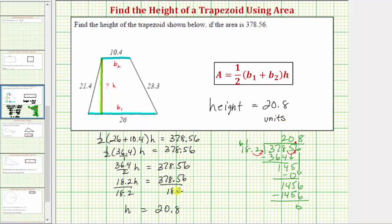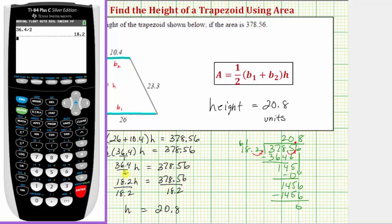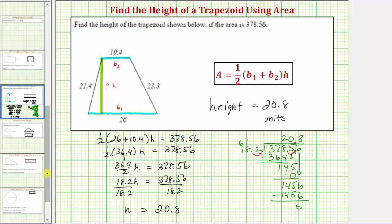Let's also verify this quotient on the calculator. So we have 378.56 divided by 18.2, which is 20.8. I hope you found this helpful.